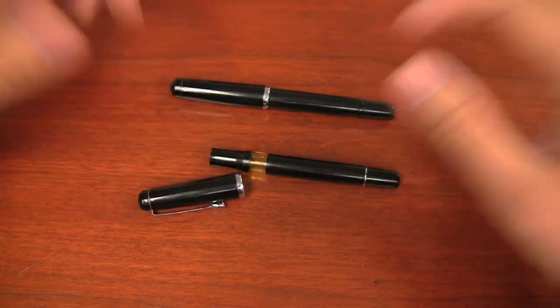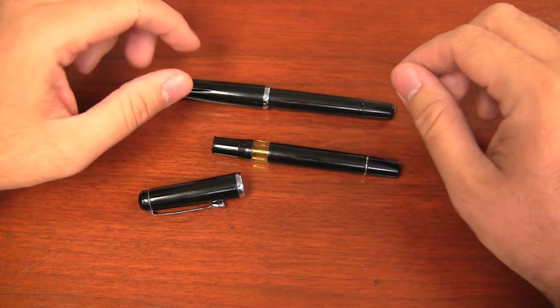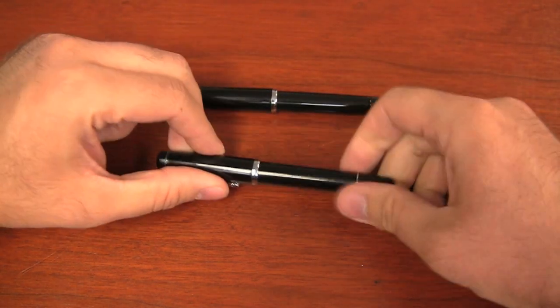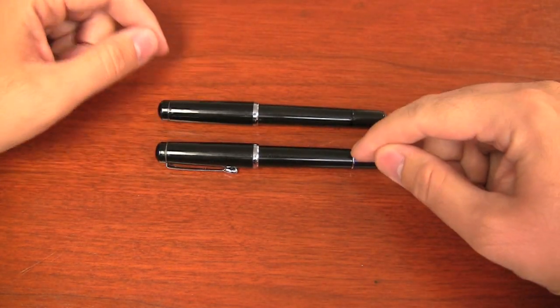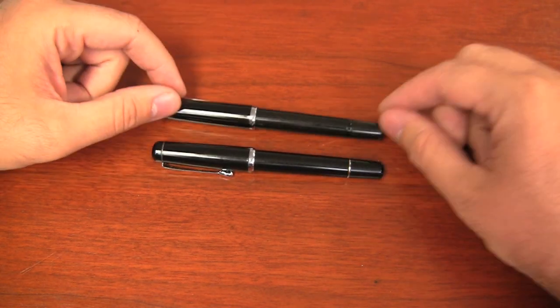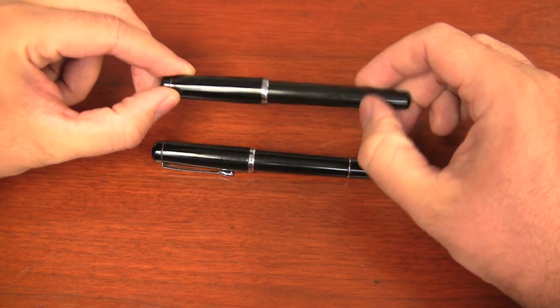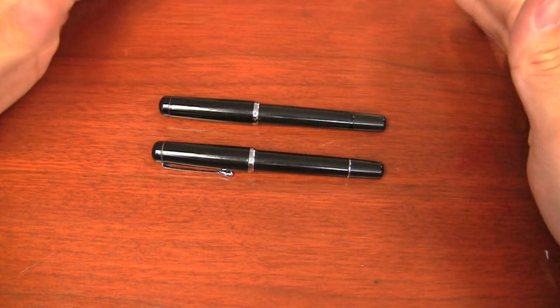So what's changed between the old one and this new one? The first and most notable one before you even open up the pen is that this is a little silver trim band here at the back finial. And the new one does not have that little silver ring. Why is that?